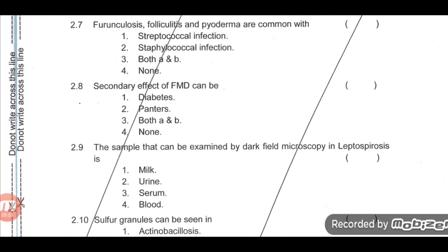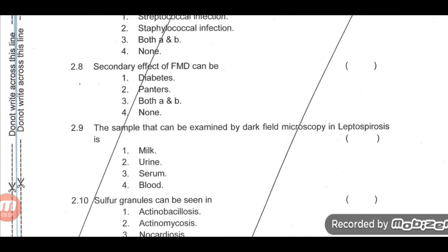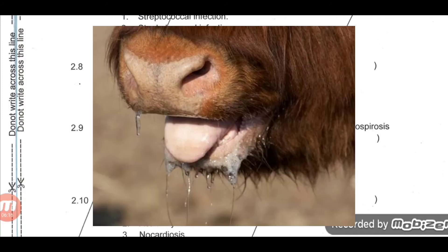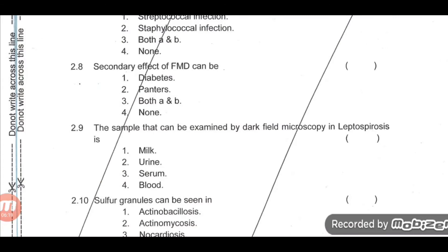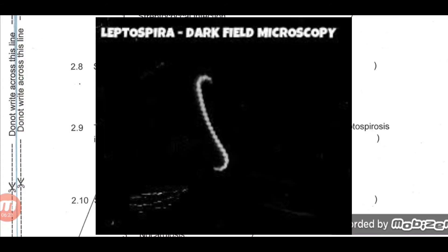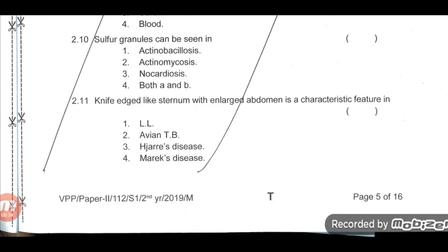In swine, splenic infarcts are common in swine fever, also called hog cholera. Furunculosis, folliculitis, and pyoderma are common with streptococcal as well as staphylococcal infection — third option is correct. Secondary effects of FMD (foot and mouth disease) include diabetes and panting — third option is correct. The sample that can be examined by dark field microscopy in leptospirosis is urine, though blood is also correct. Sulfur granules can be seen in both actinobacillosis and actinomycosis — fourth option is correct.